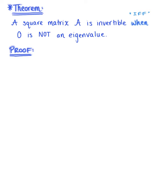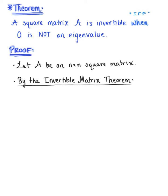Our first condition is that we want to let A be an n-by-n square matrix. Then by the invertible matrix theorem, we know that matrix A is invertible when the determinant of A does not equal 0.